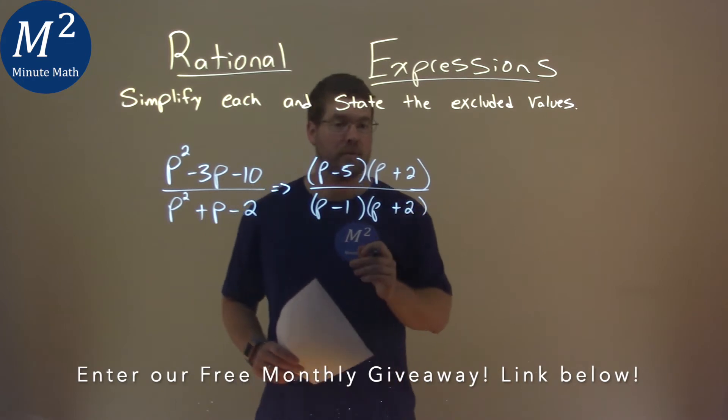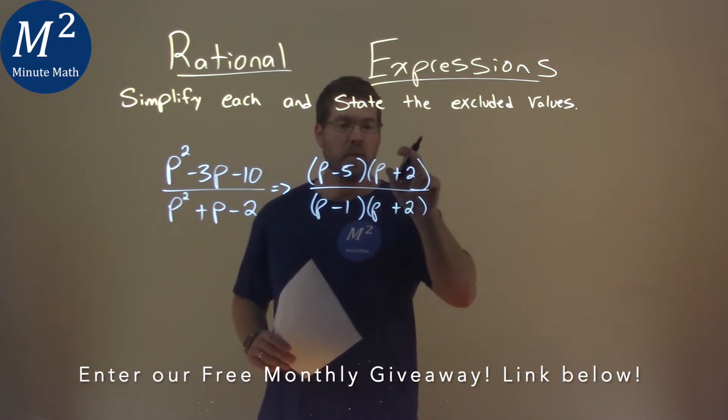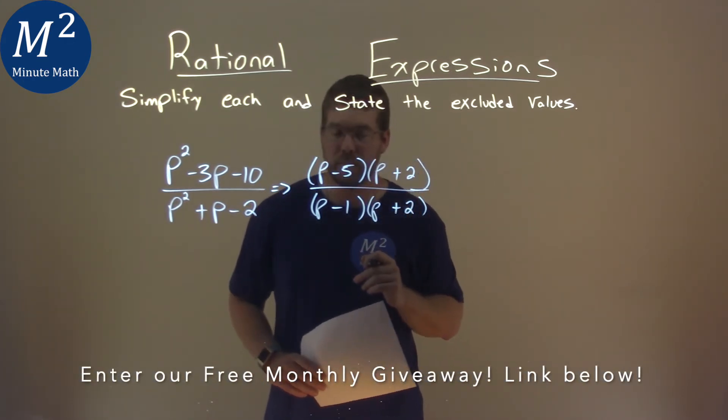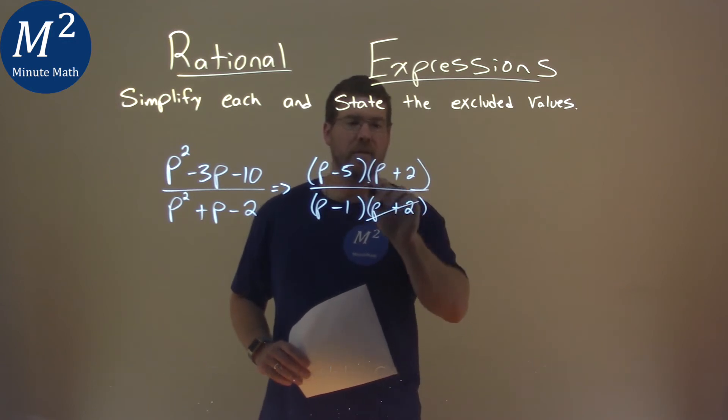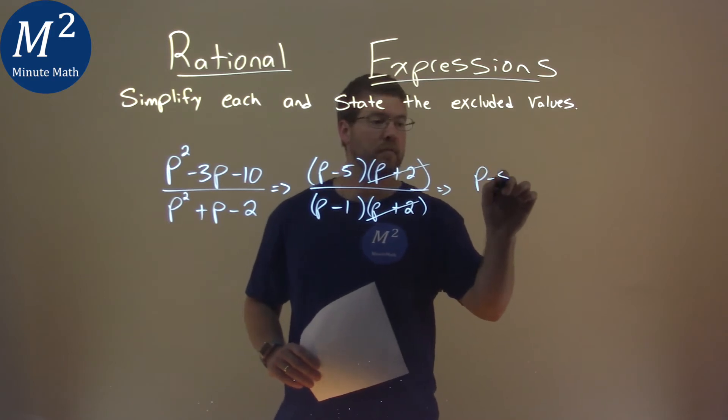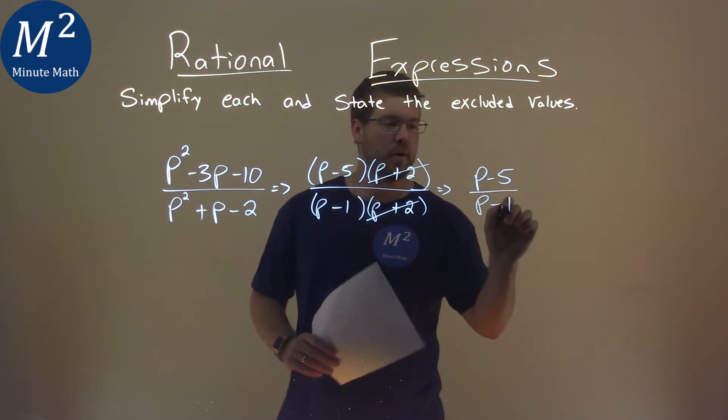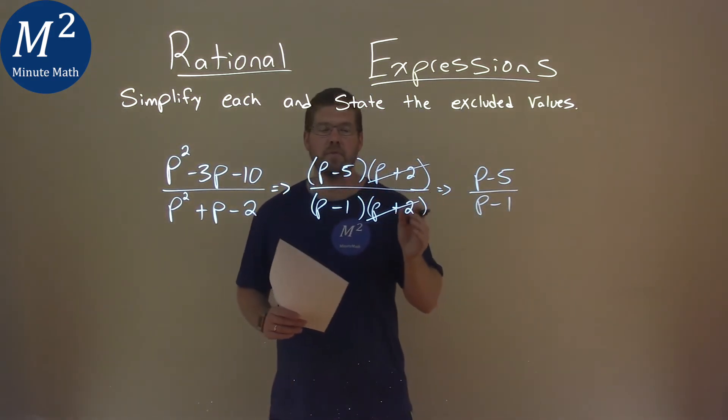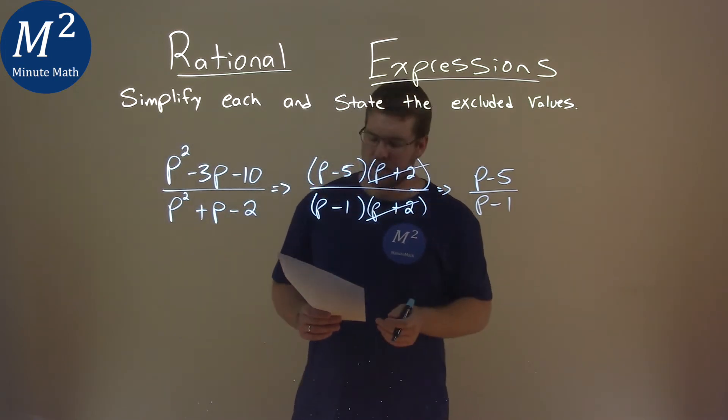Now notice here a repetition of p plus 2. p plus 2 divided by p plus 2. They can cancel each other out. And so now we're left with p minus 5 over p minus 1. And that is our simplified expression. We can't simplify it anymore.